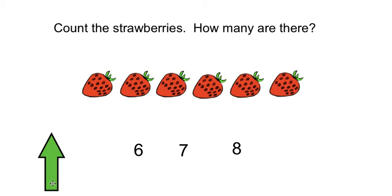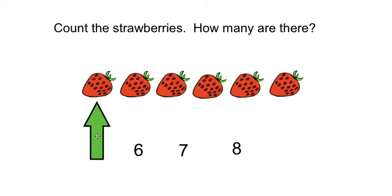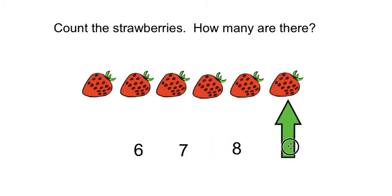This time I'm not going to use the arrow to model how to count. I want you to try counting the strawberries on your own. Parents, if your child miscounts, you can remind them to start from the beginning and try again. Alright, I'm going to count with you. Ready? 1, 2, 3, 4, 5, 6. There are 6 strawberries. Now we can double check our work — I'm going to use the pointer to count. Ready? 1, 2, 3, 4, 5, 6. There are 6 strawberries.